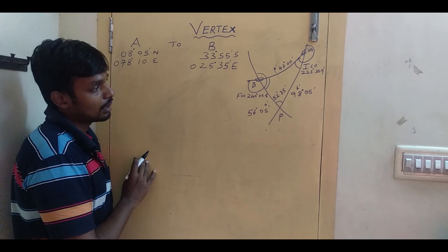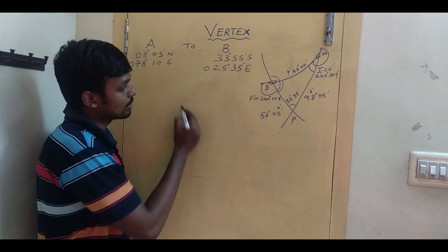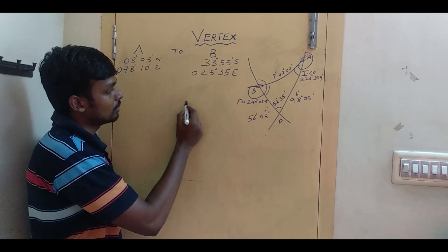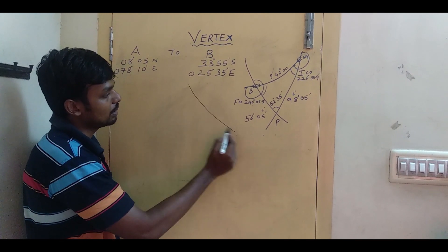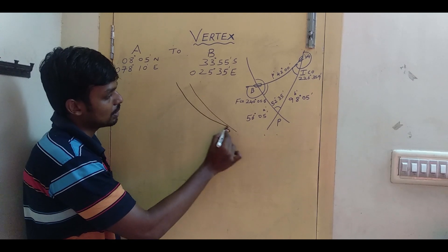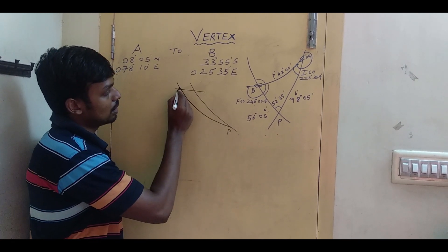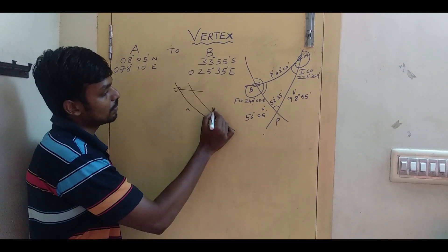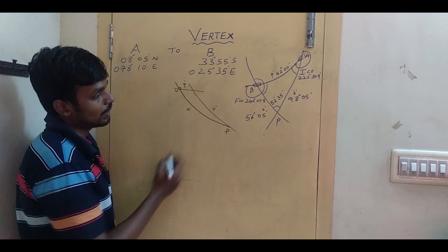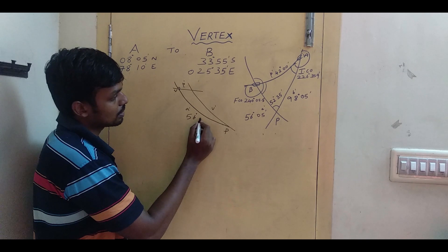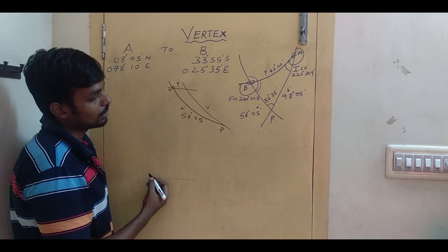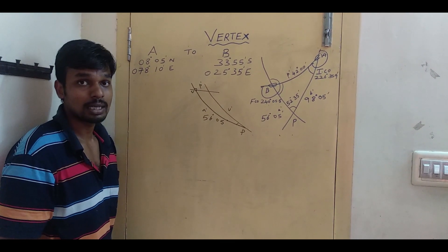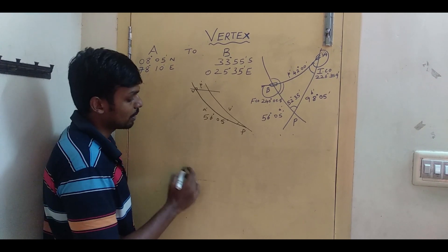Using Napier's formula — which always works with the right angle — the vertex is after B where the meridian cuts at a right angle. I'm going to draw the diagram here. This will be P, and the vertex is V. I already know that B is 56° 05'. I'm going to find P — the vertex latitude and longitude — using Napier's formula.